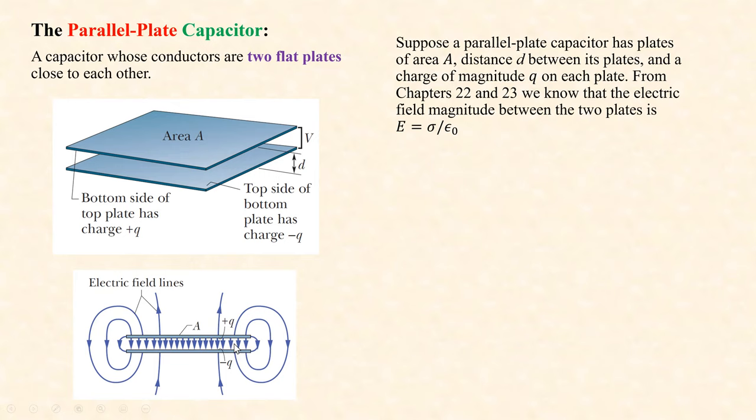So a farad is a very large unit of capacitance. That's why we use smaller units: microfarad (10⁻⁶ F), nanofarad (10⁻⁹ F), and picofarad (10⁻¹² F). If you want one farad of capacitance, the plate area needs to be extremely large. Even using a dielectric material to increase capacitance only helps by a factor of a hundred or a few hundred at most.